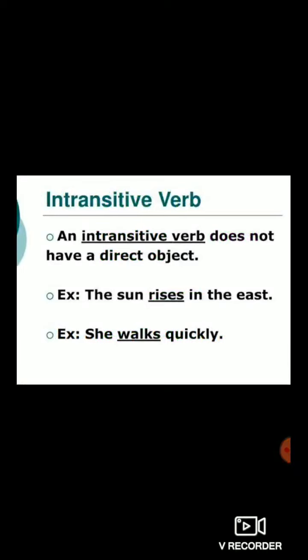Now another example of intransitive verb: 'The sun rises in the east.' The verb is rises because it is an action. Can you see a direct object? No — 'in the east' is not a direct object. So rises is an intransitive verb because it does not carry an object after the verb. Another example: 'She walks quickly.' Walks is a verb. Is there an object after the verb? No — quickly is not an object. So walk is an intransitive verb.